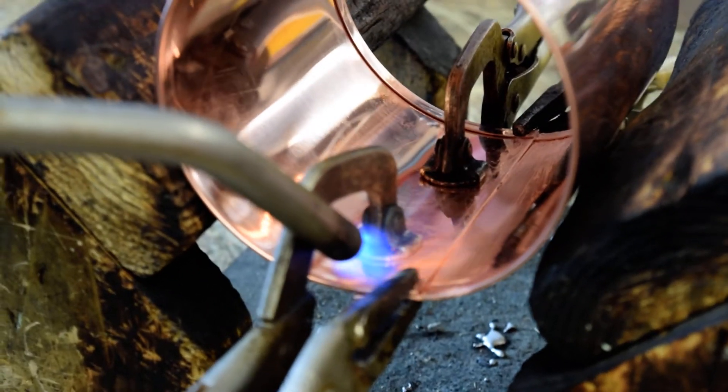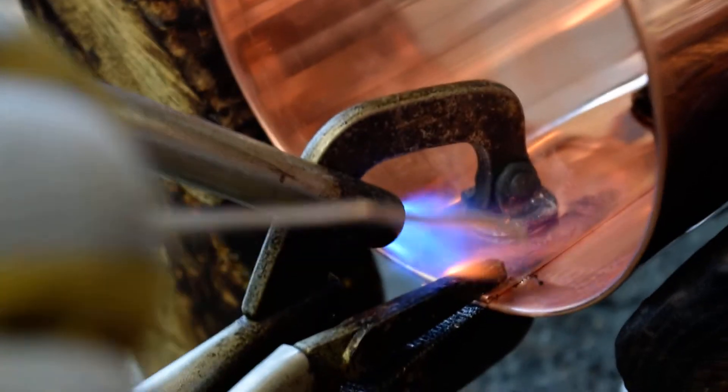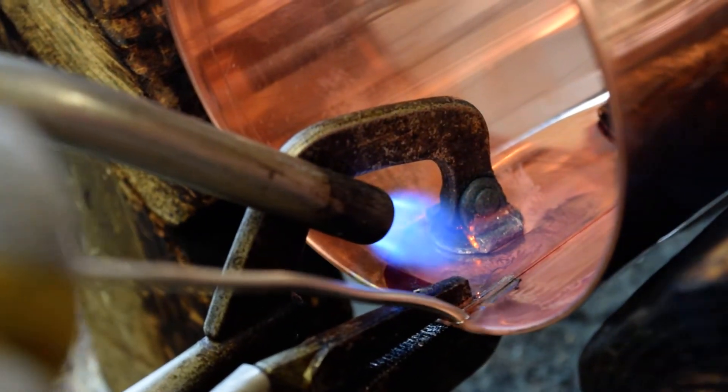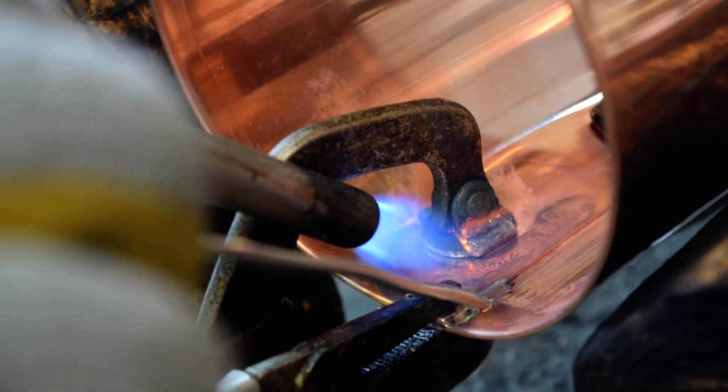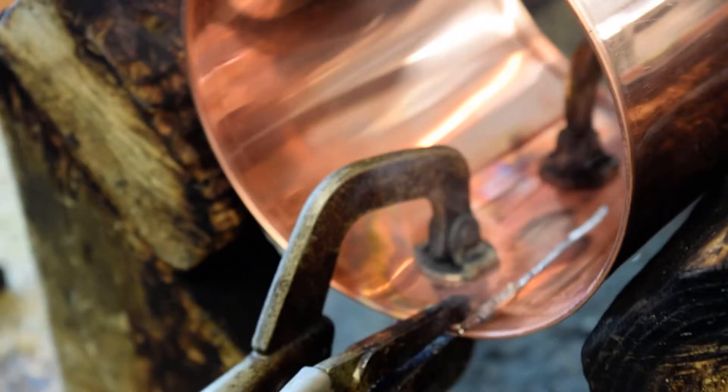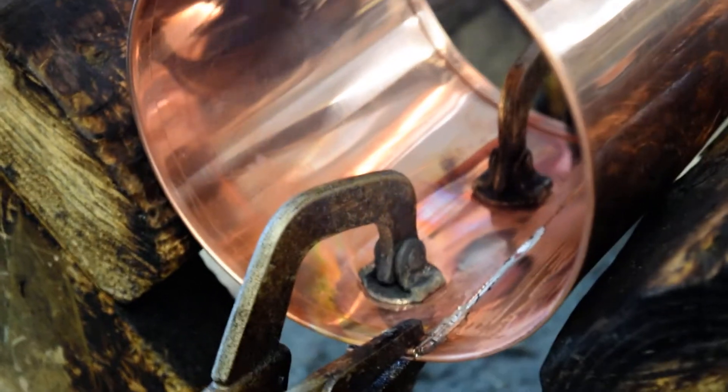Now go slow with this Bobby. I want to show everybody, you want to keep the torch and the flame ahead of the solder. You're heating up the copper first. Alright, go ahead Bobby. You want to fill it nice and good. See how the solder expands and goes where the flux is, that's why you put the flux down.